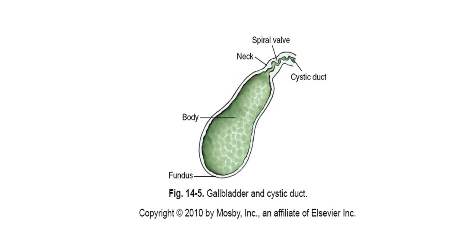The gallbladder itself is a thin-walled musculomembranous sac, usually found on the visceral surface of the right lobe of the liver, but its position may vary with body habitus. It functions to store and concentrate bile and evacuates bile when activated by the hormone cholecystokinin. The gallbladder has a fundus, a body, and a neck portion, and the neck is consistent with the cystic duct.